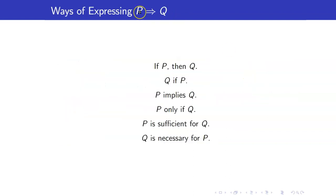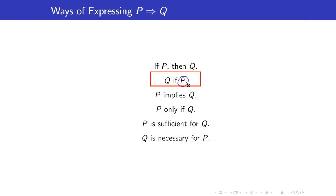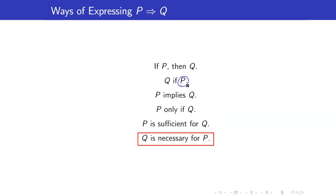Here are some ways of expressing P implies Q. You can say: if P, then Q; Q if P — here P is the premise; P only if Q — with 'only if,' the premise is the first statement and the conclusion is the second; if only — the premise is the second statement and the conclusion is the first; P is sufficient for Q; and Q is necessary for P.